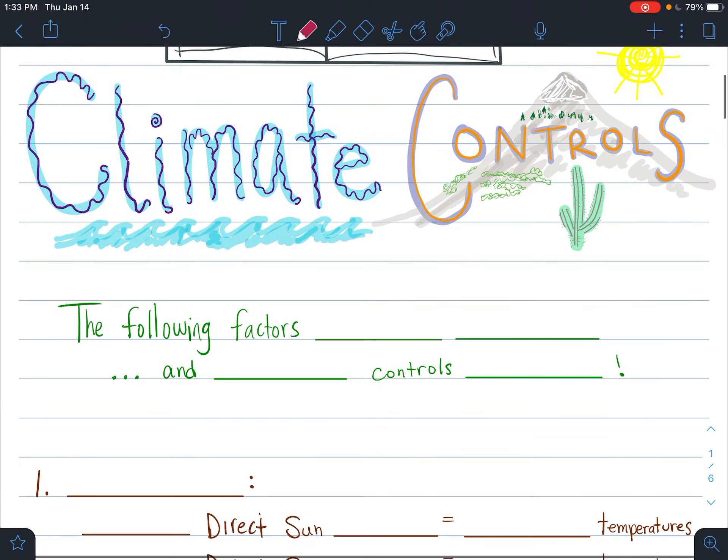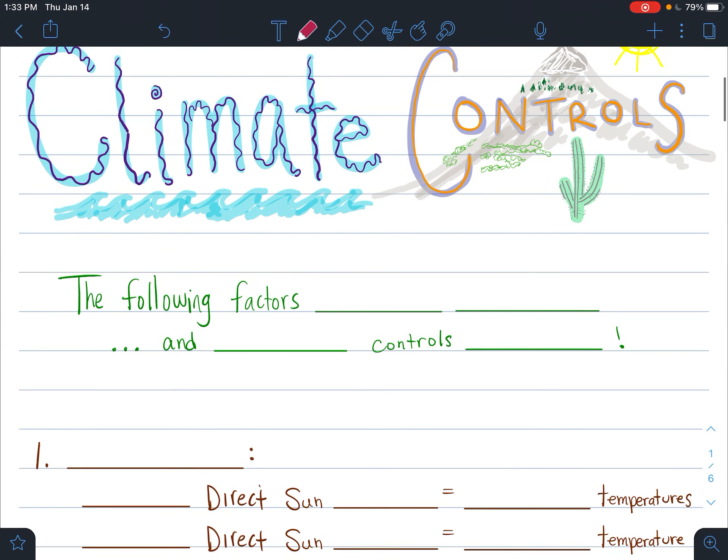So here we go. We're going to be learning about climate controls. So to begin with here, the following factors, these five factors, are what control climate. Really, we're looking at regional climate. So like a local or smaller area on the Earth. Instead of looking at the entire Earth, we're going to be able to zoom into our local communities and regions. So the following factors control, and maybe we should even say there, regional climate.